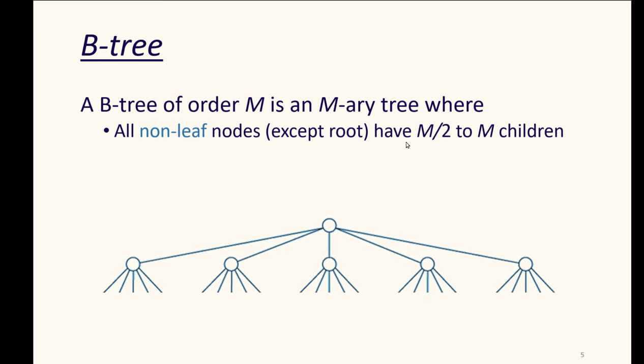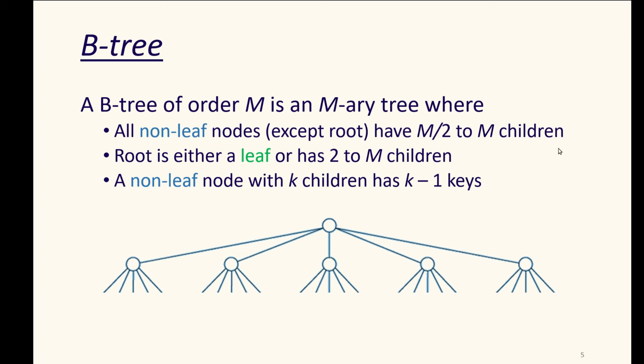All leaf nodes, I'm sorry, all non-leaf nodes, in a B tree, except the root, have M over 2 to M children. So they're going to have at least half of the amount of children that are possible, so we're not wasting huge amounts of space, out to M, whatever the maximum number is possible. The root is either a leaf in that it's the only node, or the root will have two to M children. It will be at least binary, and at most it will be M-ary. So that allows our root to be a location where things can grow, and for our non-root internal nodes, we're not wasting a ton of space.